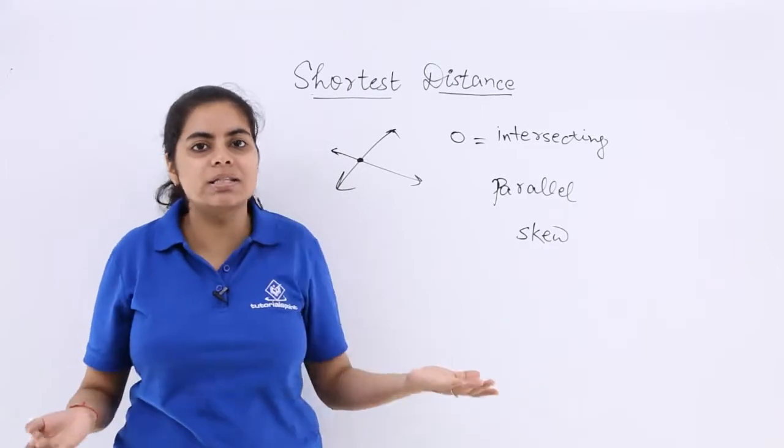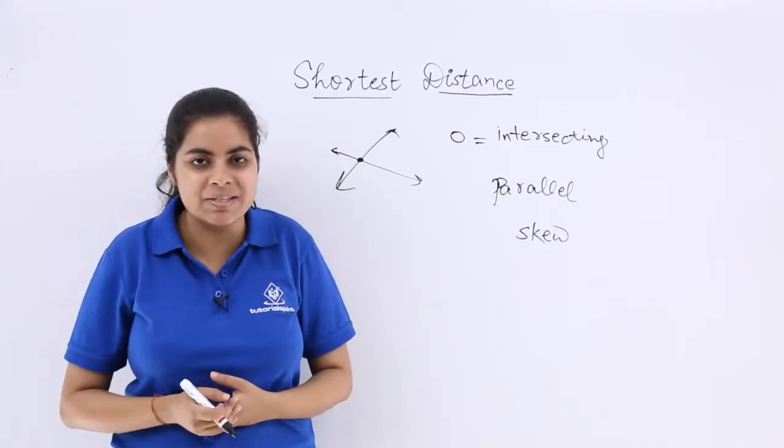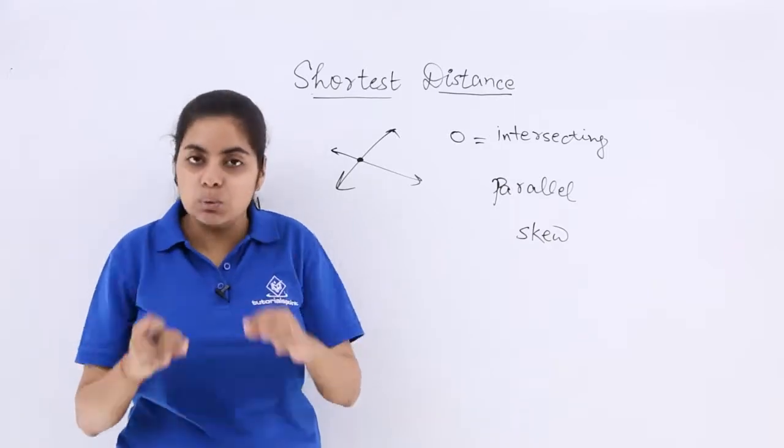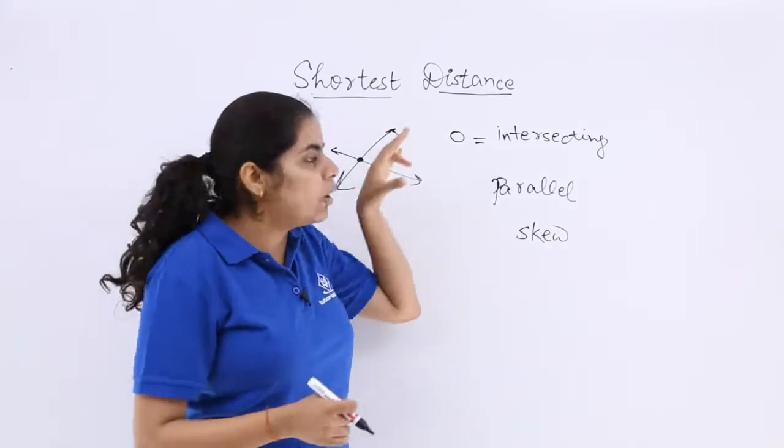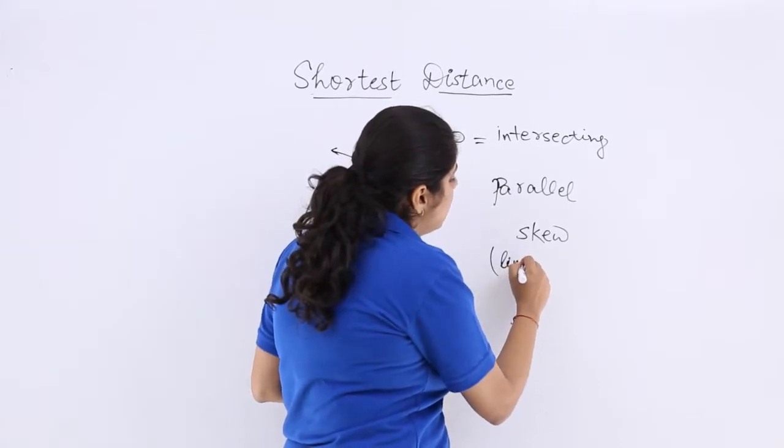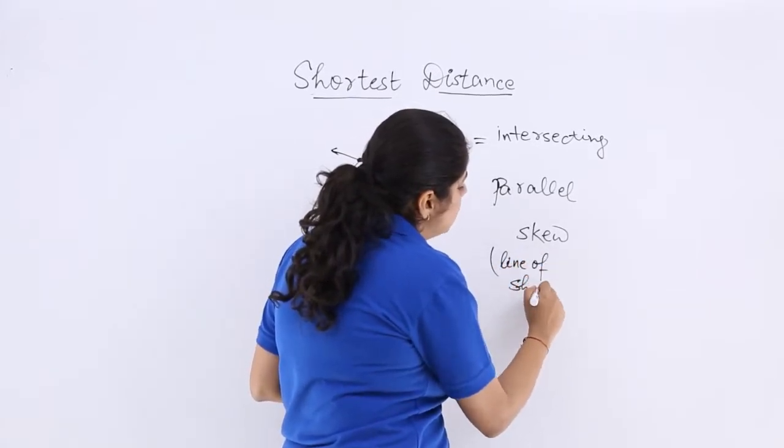Whatever is the equal distance, accordingly that might be the shortest distance. And talking about the skew lines, in skew lines you will get a concept about shortest distance wherein we will see the term called as line of shortest distance.